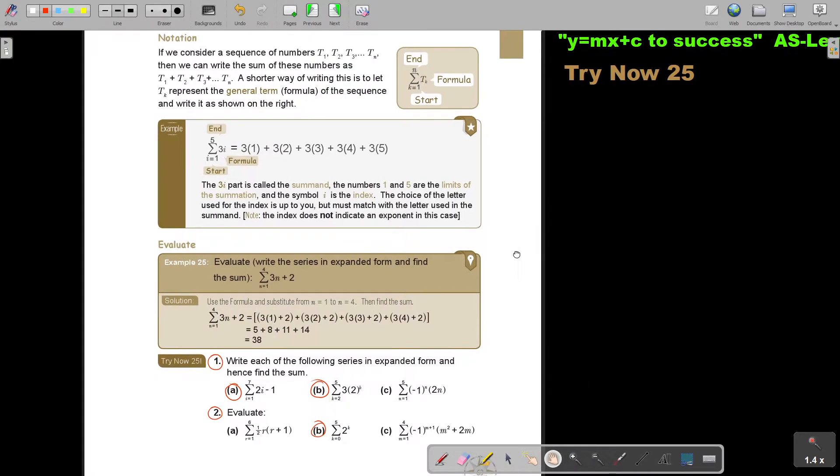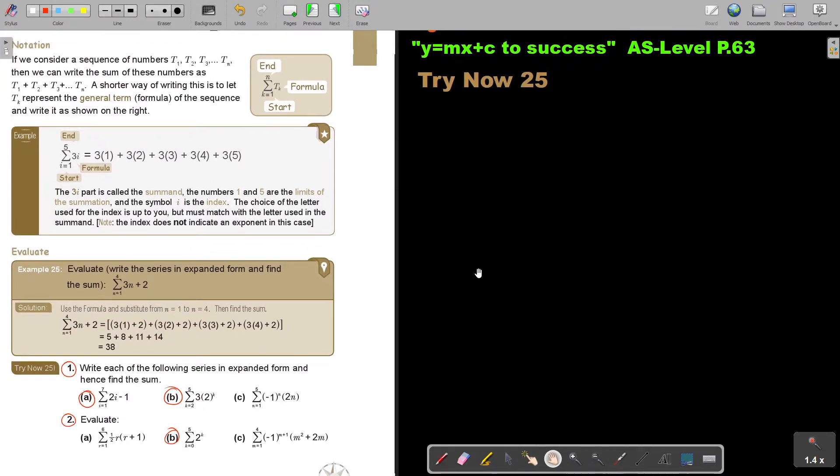Let's start. Number 25. Okay, let's start with number 1A. I'm first going to write it. This is 7, and this is going to be I equals 1, and the formula is going to be 2I minus 1. So it's going to be 2(1) minus 1, and then plus, and then it's 2(2) minus 1, and you count on until you come to 7. So it's 2(3) minus 1,